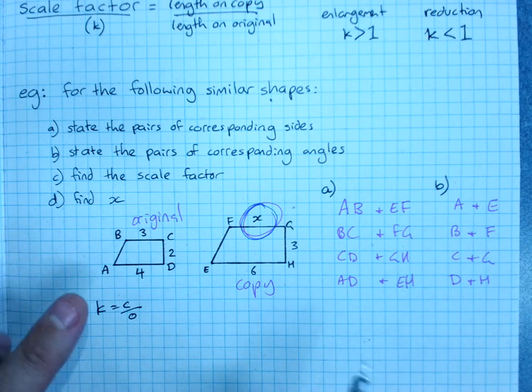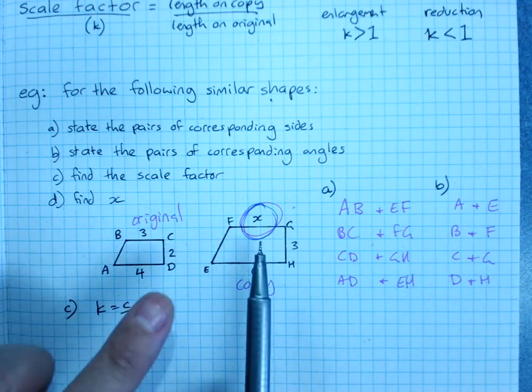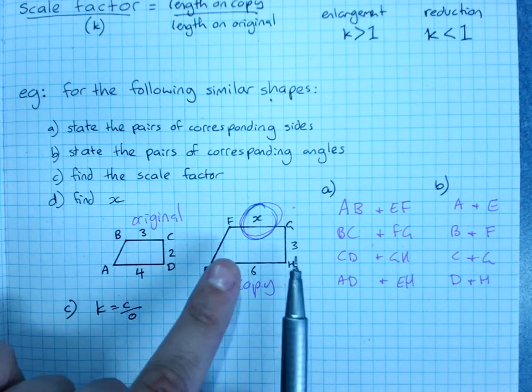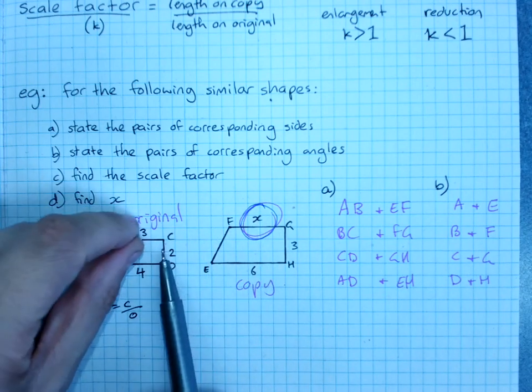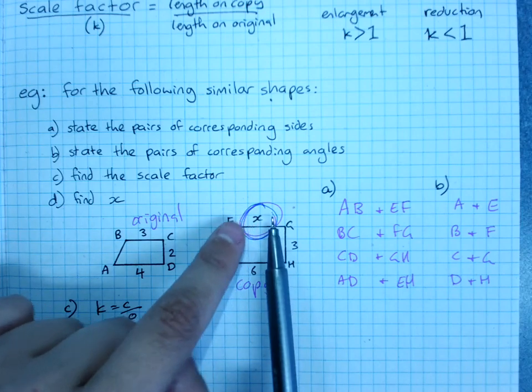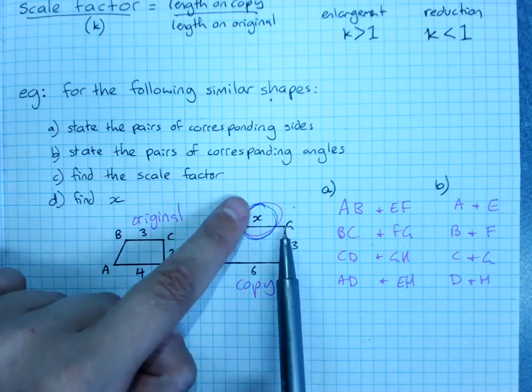So, that way, the copy over original says, well, in that case, this will be the larger one. This was an enlargement, and to get X, I'm going to need an enlargement of 3.